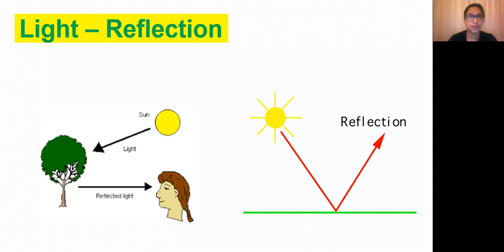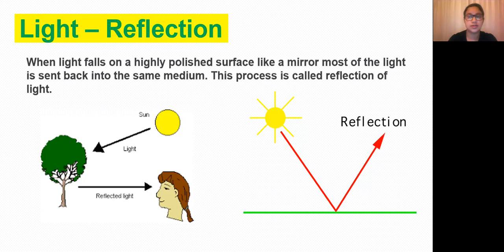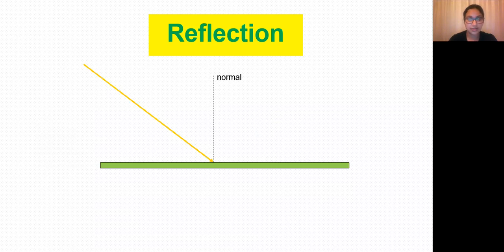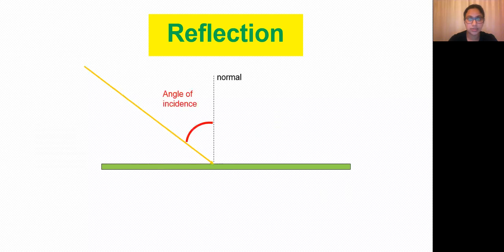A highly polished surface such as a mirror reflects most of the light incident on it — this process is known as reflection of light. To understand reflection in detail, consider a mirror. Draw a normal to the mirror surface, which makes an angle of 90 degrees to the mirror surface. A ray of light incident on the mirror surface makes an angle with respect to the normal called the angle of incidence, represented by the small letter i.